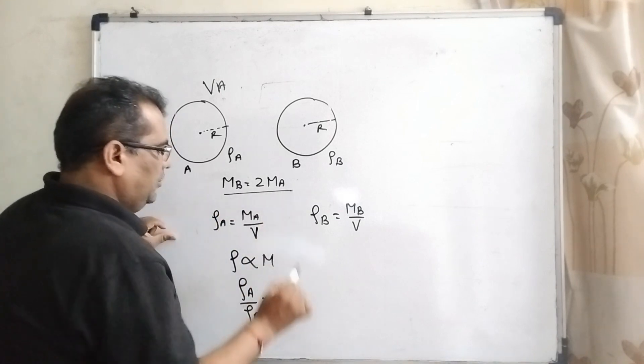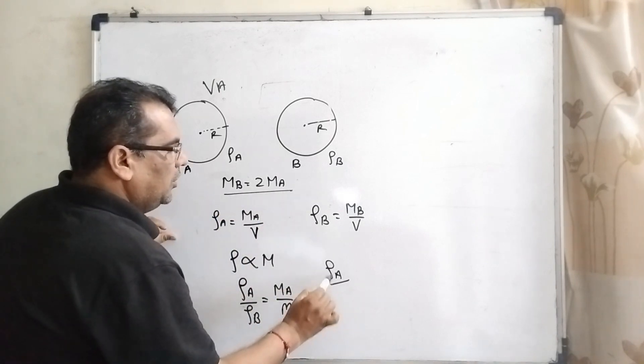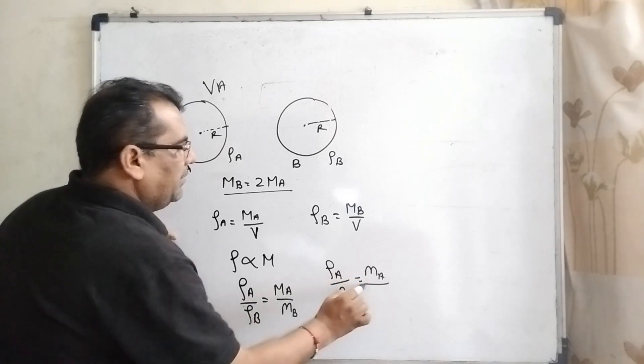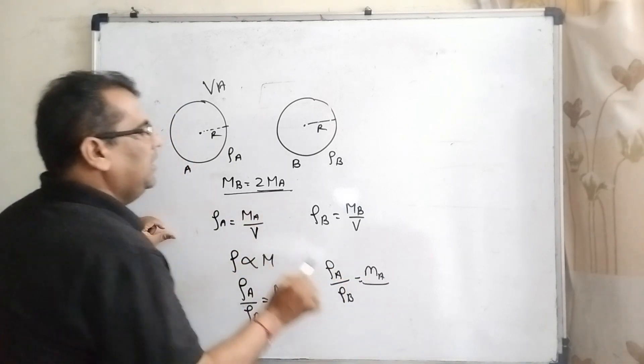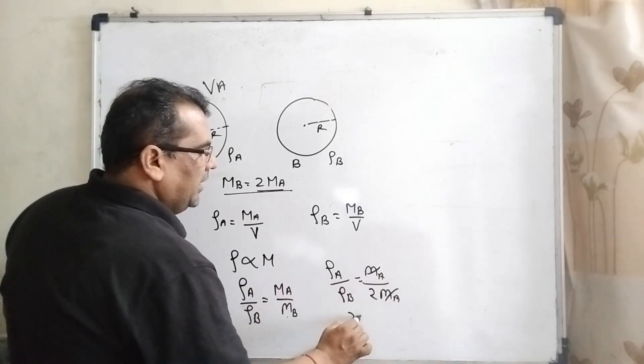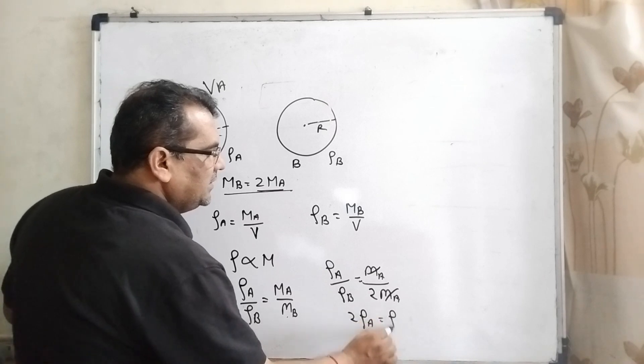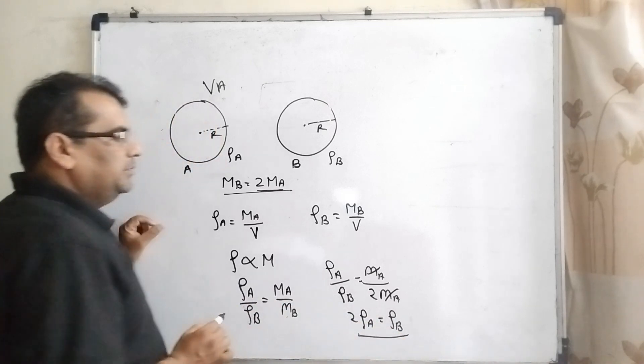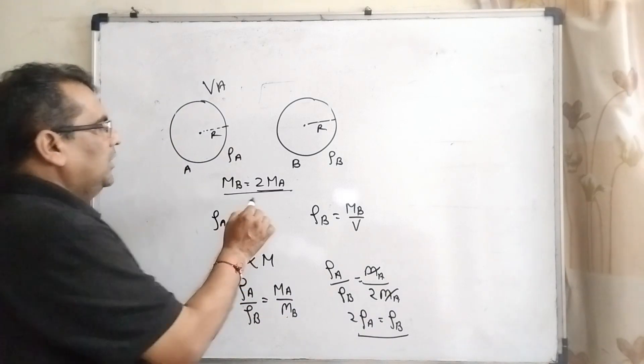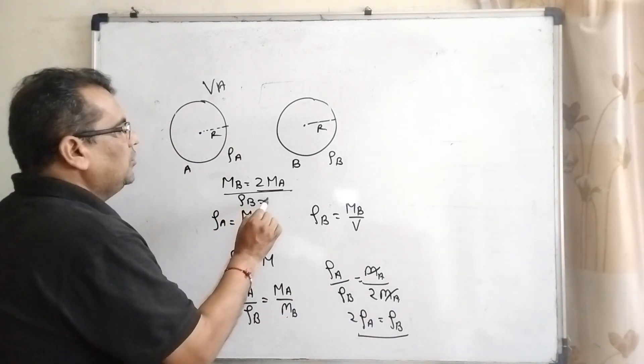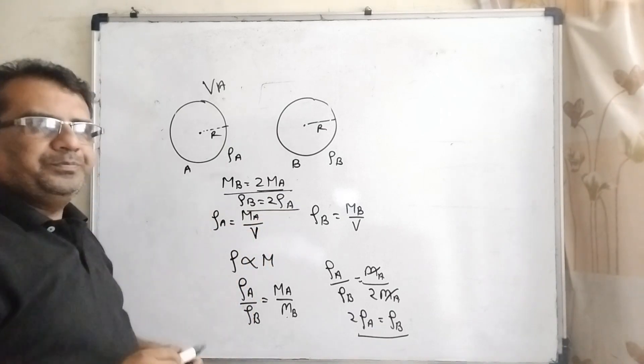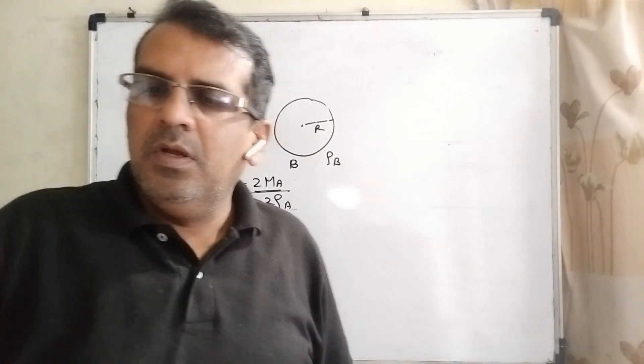What is the relation? You have ρA upon ρB equals Ma upon Mb. In place of Mb, it can be written as 2Ma. So here the relation of the densities is ρB equals twice of ρA. Is it clear?